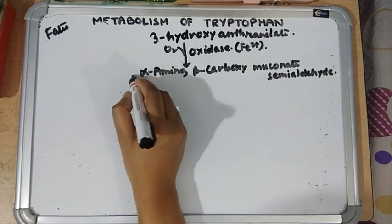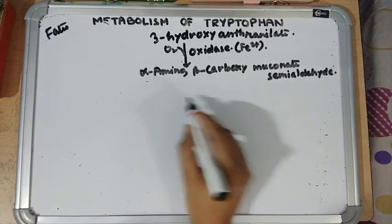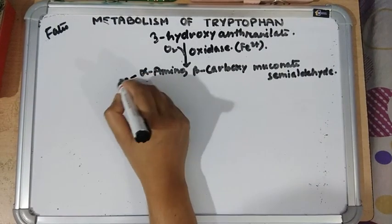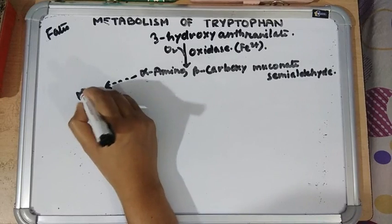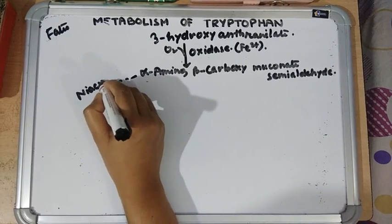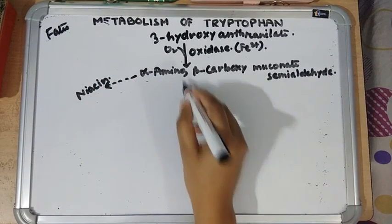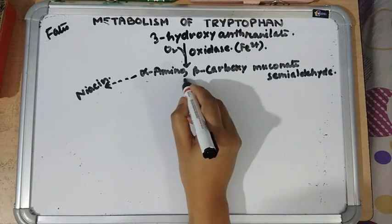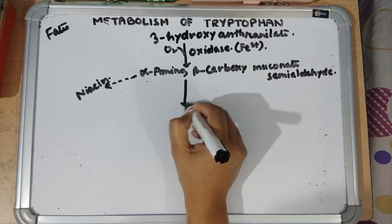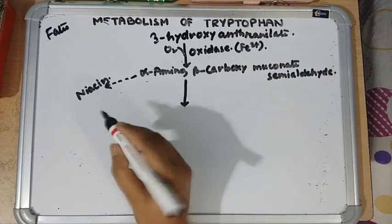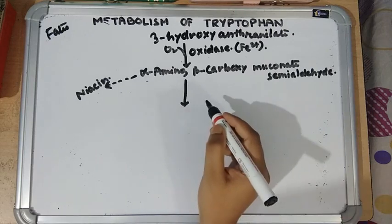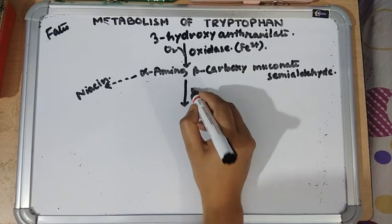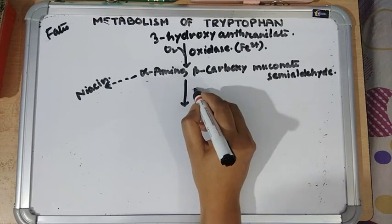It is converted into alpha-amino-beta-carboxyl-muconate-semialdehyde. There are two fates of this intermediate: either it can form niacin and then NAD, or it can be catabolized to ketone bodies. We will discuss the ketone body pathway first.